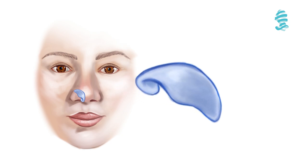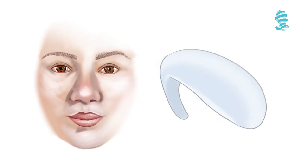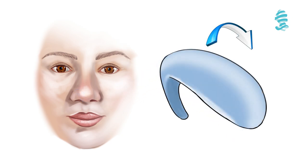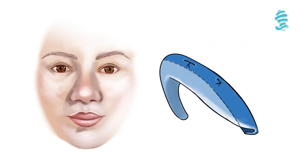The tip of the nose appears aesthetically more pleasing after volume reduction of the lateral crura, mostly by cephalic trim and some cartilage-sparing techniques such as the lateral crural turnover flap technique.